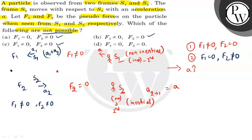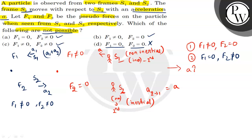So three options will not be the answer. Now we check the fourth option: F1 equal to 0 and F2 equal to 0. This will not be possible. Because the question states that the S2 frame moves with acceleration with respect to S1. When there is relative acceleration between the frames, at least one of the pseudo forces cannot be zero. So the force will not be 0, and both F1 and F2 being 0 simultaneously is not possible. The question asks which of the following is not possible — our answer is Option D.